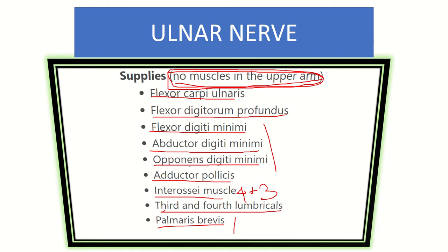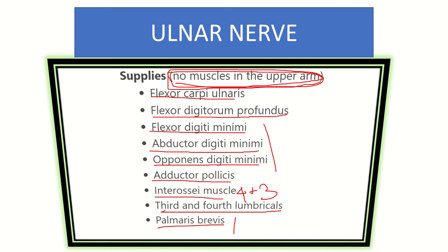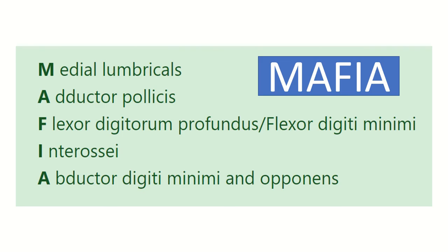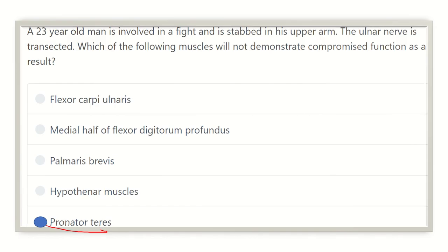Our final answer is pronator teres. In the list of muscles supplied by the ulnar nerve, we did not find pronator teres. So our answer is pronator teres — it receives no innervation from the ulnar nerve. Pronator teres gets its innervation from the median nerve.